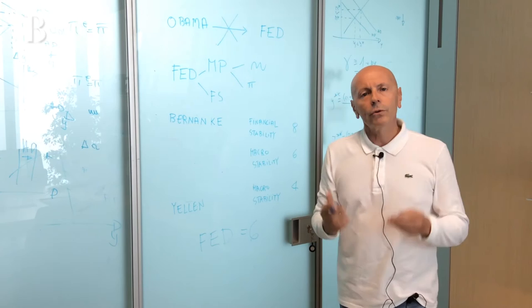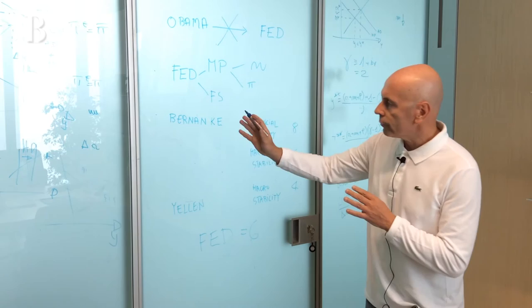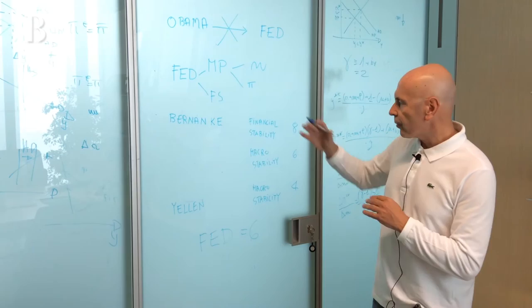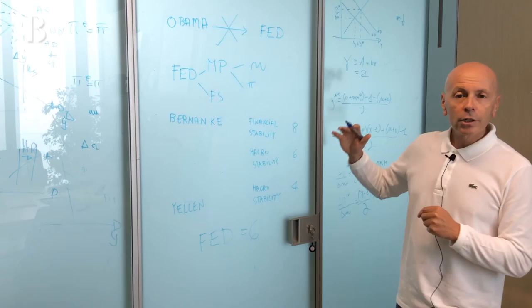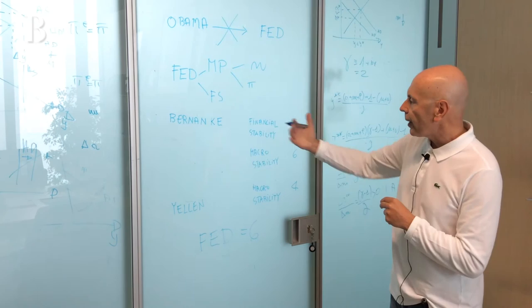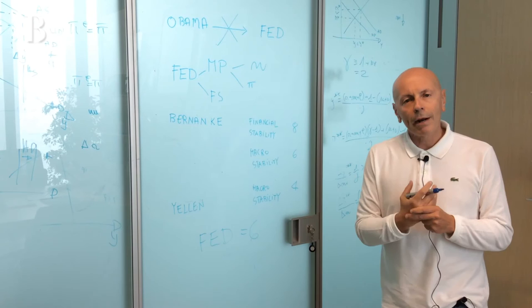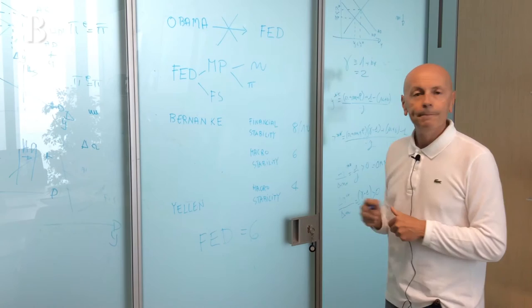In order to evaluate the overall Fed action, we can focus our attention on the Chairman. First, there was Bernanke. We can split the Bernanke period into two phases. After the crisis, after 2008, he addressed and fixed financial stability problems in a good way. To summarize my evaluation, we can give a grade of 8 out of 10.